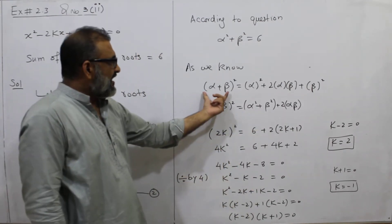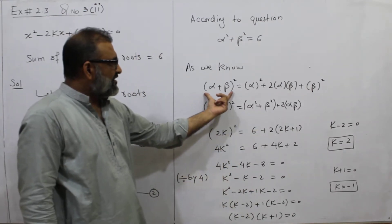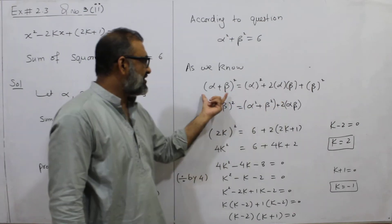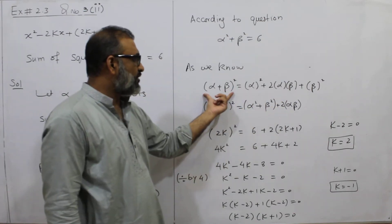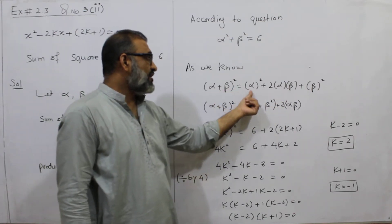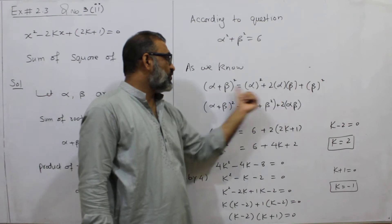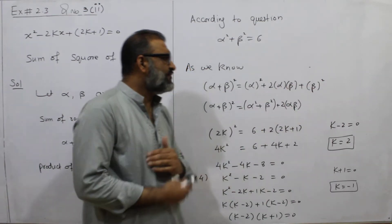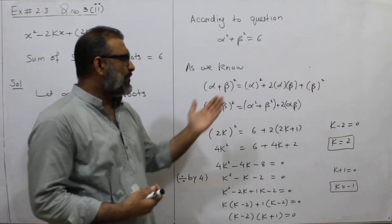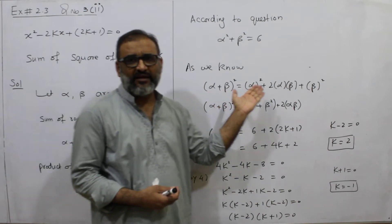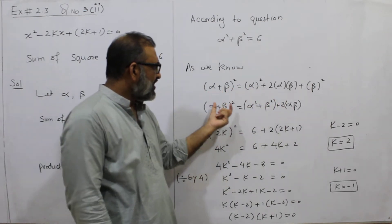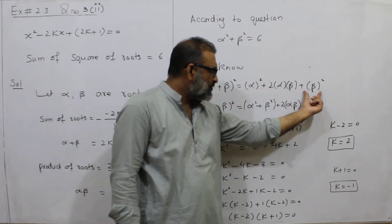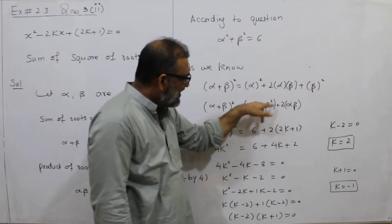What did I do with alpha plus beta? You know the formula: first term squared plus 2 into first term into second term plus second term squared. This is not new for you — you have studied this in grade 7. Then I have alpha squared and beta squared. This is not a bracket.